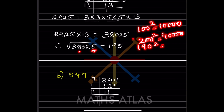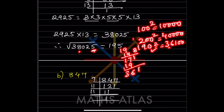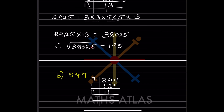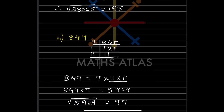Since 100² = 10000 and 200² = 40000, 38025 is between 190 and 200. Since the units digit is 5, the answer must be 195. We verify: 195 × 195 = 38025. So the square root of 38025 is 195.